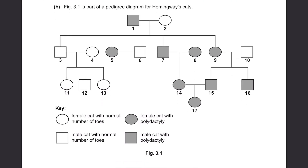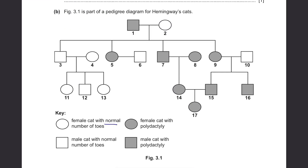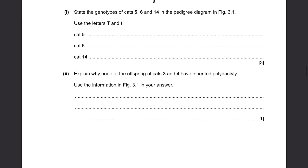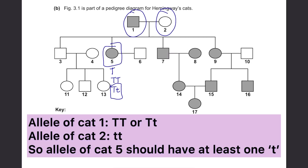Part B. Figure 3.1 shows part of a pedigree diagram for Hemingway's cats. Polydactyly is dominant. Female and male cats with a normal number of toes are unshaded, while shaded ones have polydactyly. State the genotypes of cats 5, 6, and 14 using the letters T (dominant) and t (recessive). Cat 5 is a female cat with polydactyly, so it has at least one T. Since its mother, cat 2, was a female cat with normal toes, cat 5 should be heterozygous (Tt), carrying one allele for normal toes from its mother.